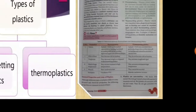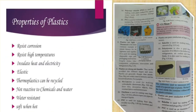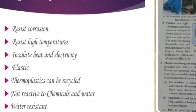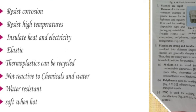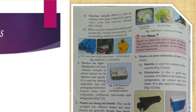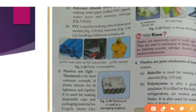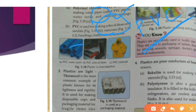Why is plastic very important to us? Properties: it does not corrode, it can resist high temperature, it insulates heat and electricity, it is elastic, thermoplastic can be recycled, it does not react with water and chemicals so we can fill reactive chemicals inside plastic containers, it is water resistant, and it can be remolded. Please learn this: PVC stands for polyvinyl chloride. It is used to make PVC pipes, water pipes, soles of shoes and sandals, handbags, and bathtubs.